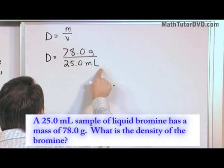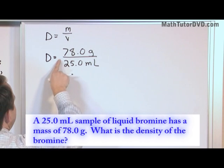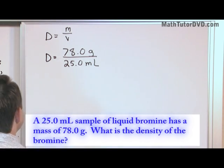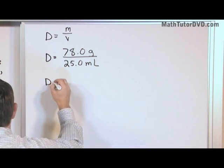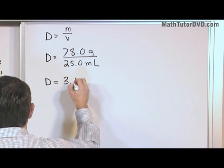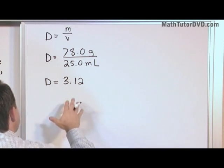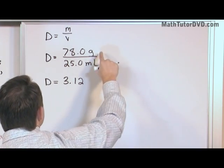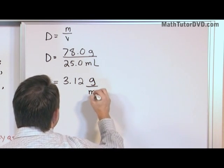Remember, milliliters are a unit of volume — one one-thousandth of a liter. One milliliter is also equal to one cubic centimeter. So what we need to do is take our calculator: 78 divided by 25. When you do that you're going to get 3.12. But don't ever write just a number down for the answer — you need to have a unit. The units here are grams per milliliter.